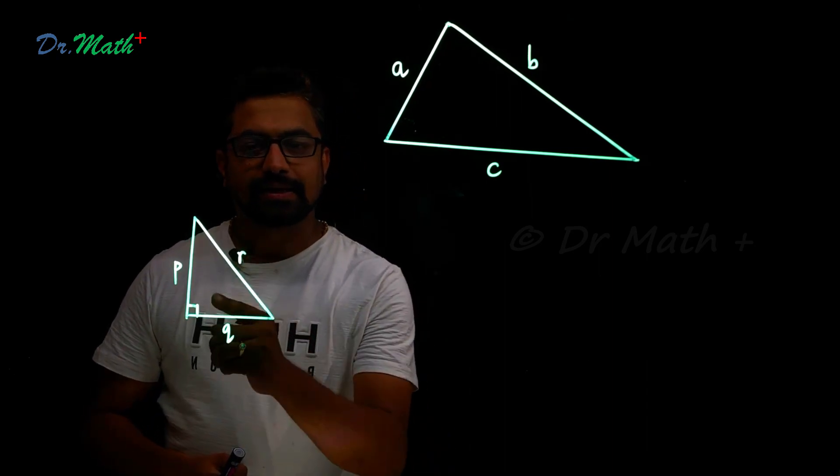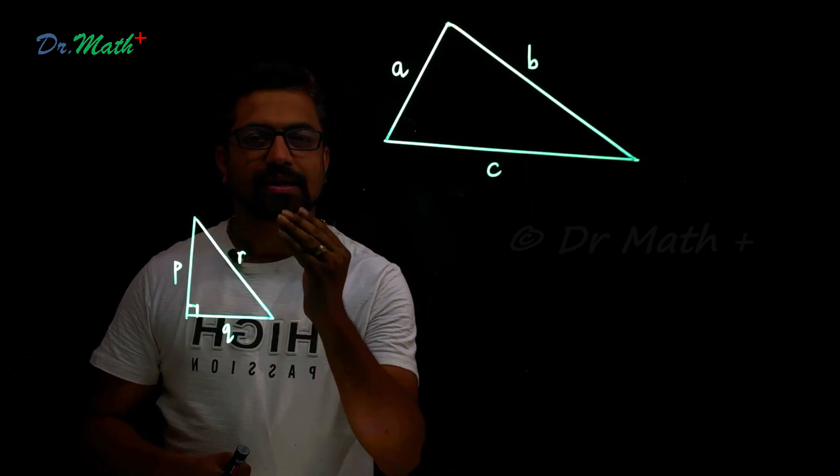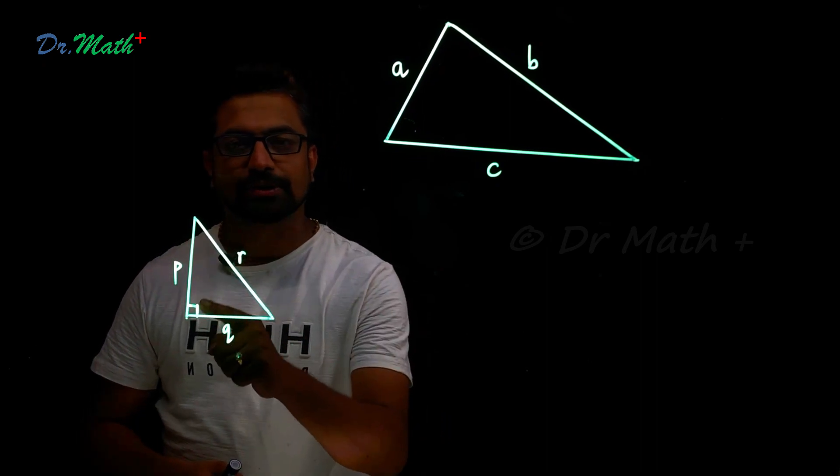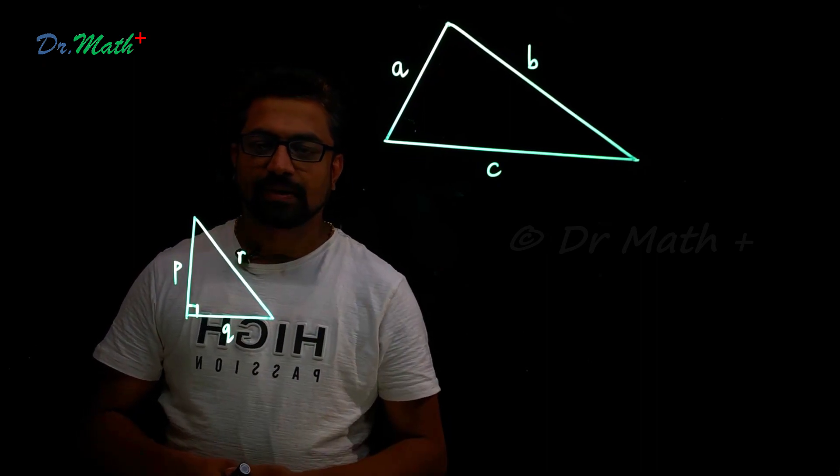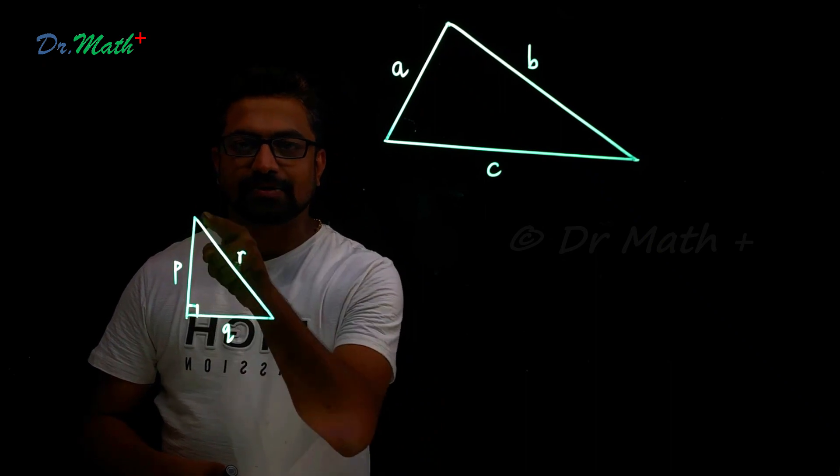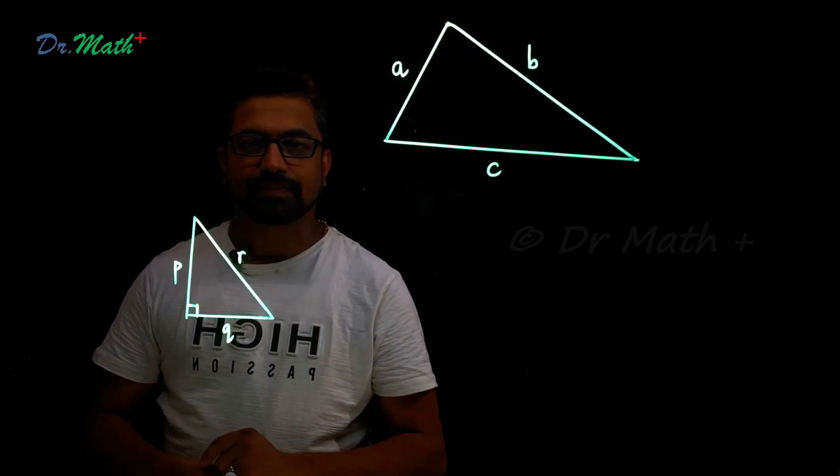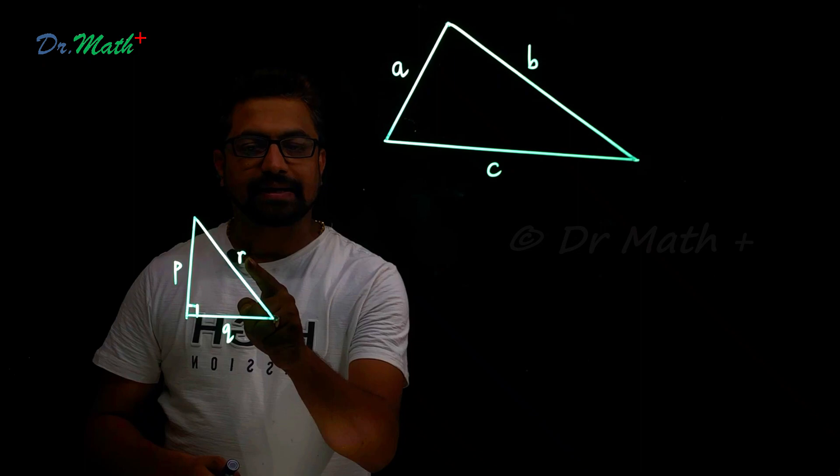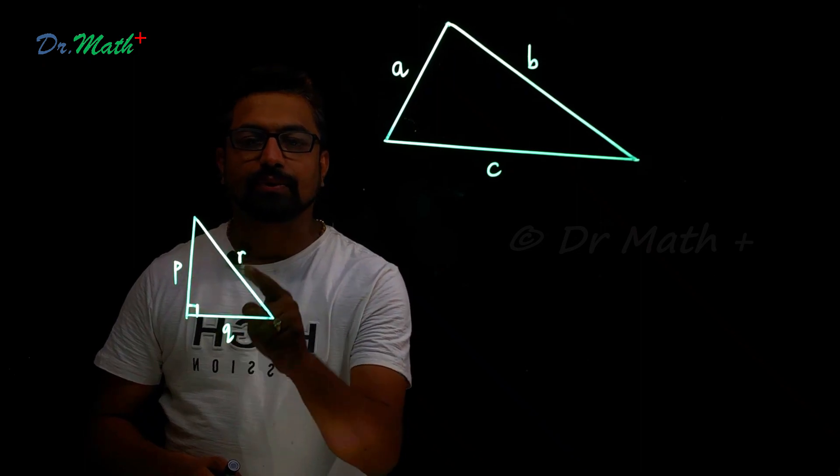Hypotenuse is a side opposite to 90 degrees. So if this is a right angle triangle with hypotenuse r, r is the greatest among p, q, r.